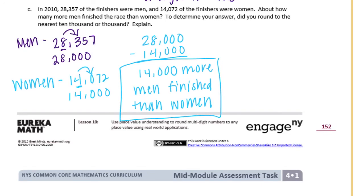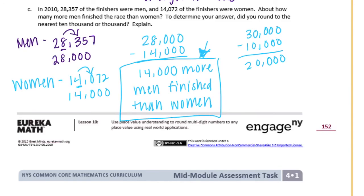You could have a different estimate. If we rounded to the nearest ten thousand, 28,357 would round to 30,000 and 14,072 would round to 10,000, giving 20,000 more men. Rounding to the nearest thousands place gives a more accurate estimate than rounding to the ten thousands place.